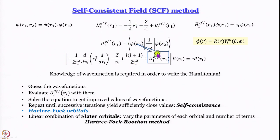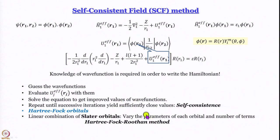The self-consistent field method helps us out of this strange problem. What we do is guess the wave function — and today the only new thing we will do is show you one kind of wave function we can actually use. Using this wave function we evaluate the effective potential, solve the equation, and we do not get back the same wave function; we get a new set of wave functions slightly different from the initial guess. We keep repeating until two successive calculations give values that are close. These are called self-consistent results, and the orbitals obtained are called Hartree-Fock orbitals. Generally, we take linear combinations of Slater orbitals, vary the parameters of each orbital, and also vary the number of terms — this is called the Hartree-Fock-Roothaan method.